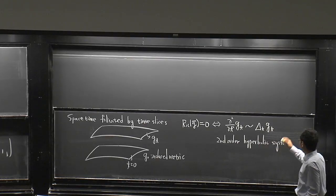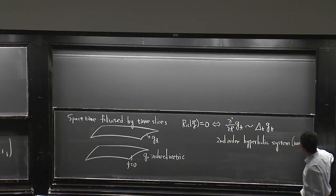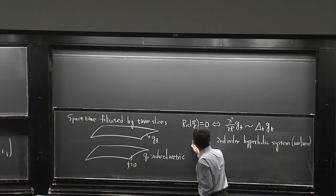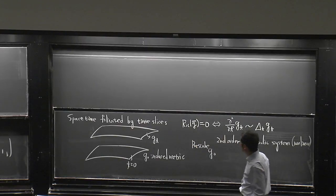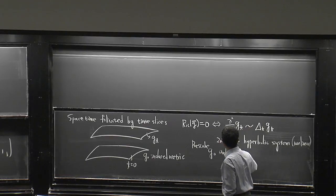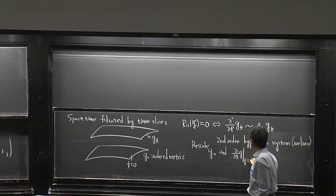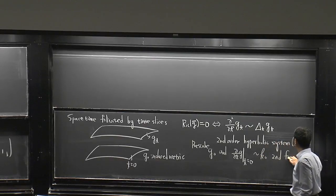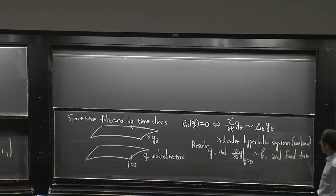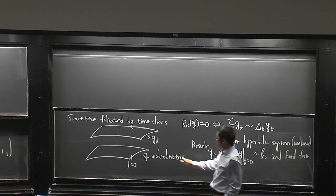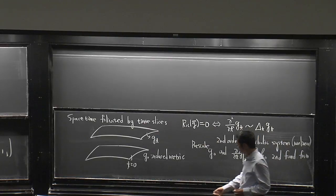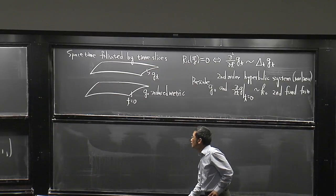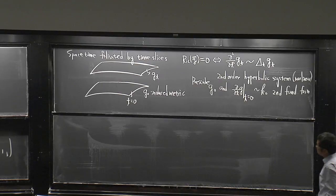This is actually a second-order hyperbolic system — in fact much more complicated and very nonlinear. For a second-order equation, you need to prescribe the initial value and also the first derivative, which is roughly the second fundamental form. In a good gauge, this is exactly the second fundamental form of the time slice.